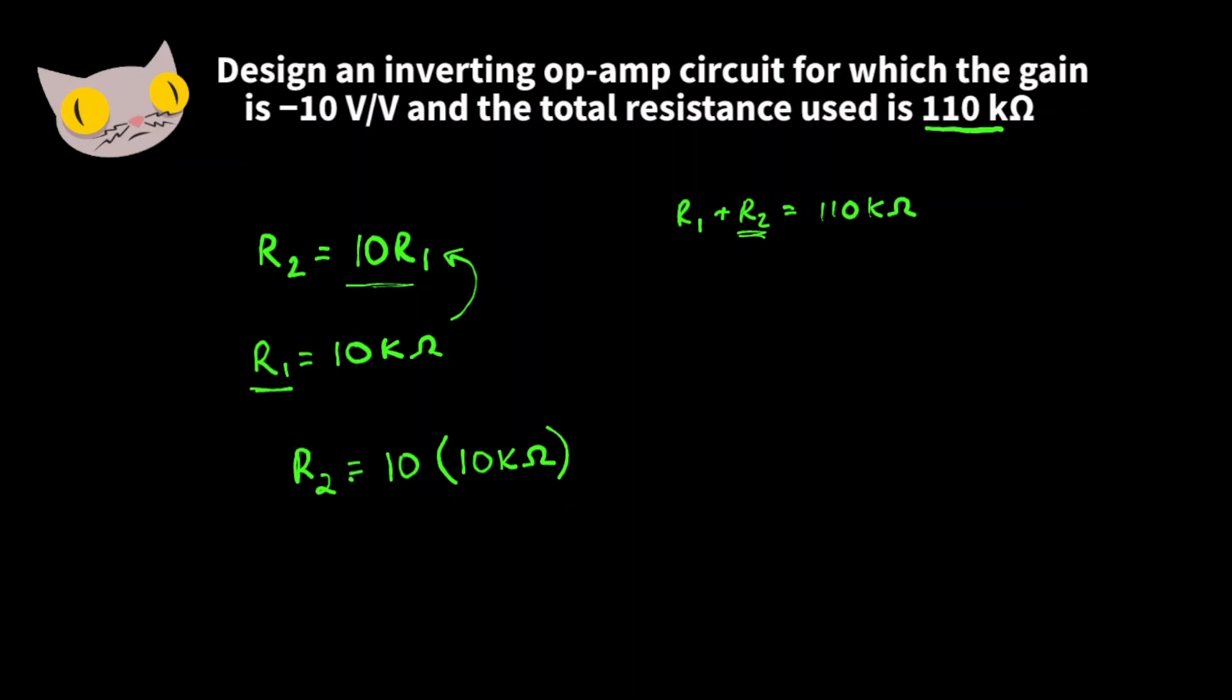That gives us R2 is equal to 10 times 10k ohms, which leaves us with 100,000 ohms.